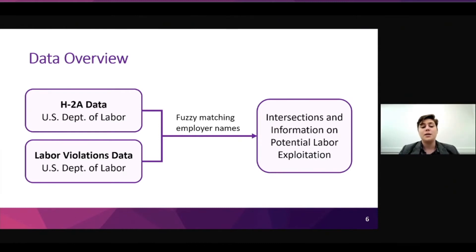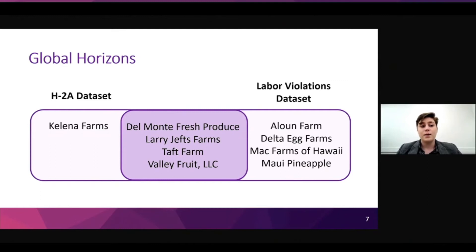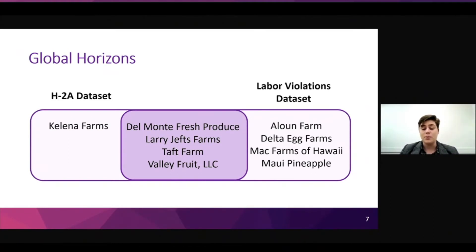From these two data sets, we plan to use fuzzy matching on the employer names to link relevant records and identify where the two data sets intersect. This can tell us which employers receive H-2A employees, which employers have been investigated for labor violations, and which have both — potentially giving us information on labor exploitation. We're also investigating 12 federally prosecuted cases of agricultural labor exploitation and trafficking, one of which focuses on the conglomerate called Global Horizons. This case is particularly interesting because many of the documented victims were on H-2A visas. The data sets we're working to link demonstrate a connection between companies that employed H-2A workers and companies that were prosecuted for labor violations. The intersection of those four companies in the center of the graphic clearly indicates agricultural labor exploitation and potentially indicates labor trafficking.